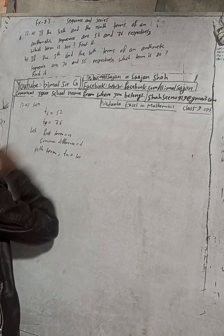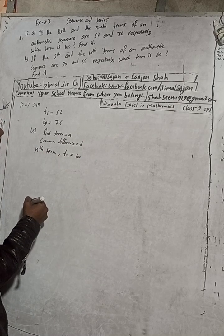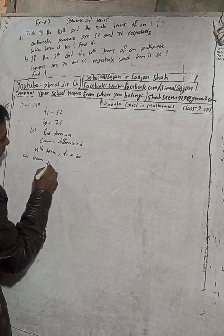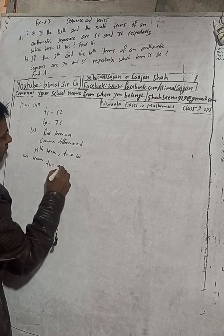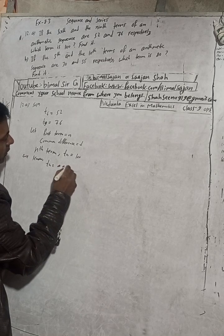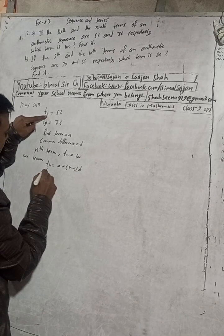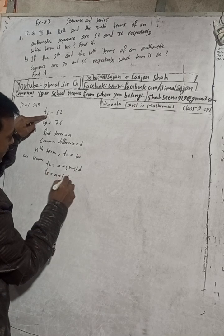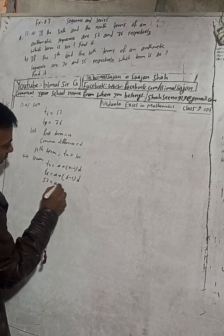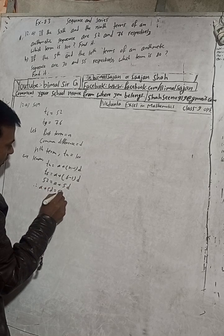We know the formula: tn is equal to a plus (n minus 1) into d. In place of n, put 6. So t6 equals a plus (6 minus 1)d, which gives us t6 equals 52, therefore a plus 5d is equal to 52. This is equation 1.